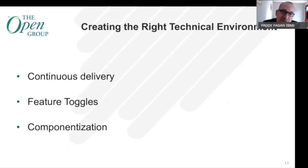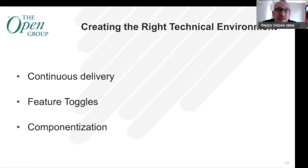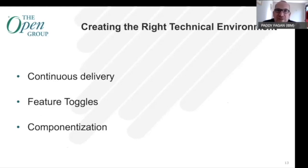Componentization — certainly important in our world because we started with a monolithic application. The message here is: just because you start with a monolith, you don't have to stay with one forever. You're not married to the monolith. The real power is the ability to say we're going to use this thing because it has a lot of value, put a strangler in front of it or use other patterns, and then gradually chip away and make good decisions about how to attack that over time based on business returns. It's not about spending six months taking it apart on day one — it's about building an environment you'll be living with and evolving over time.